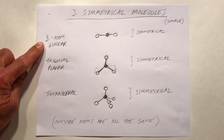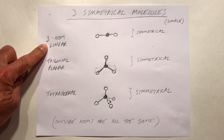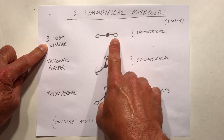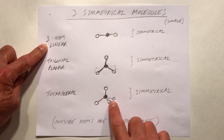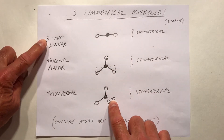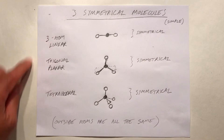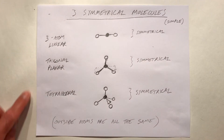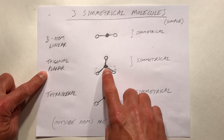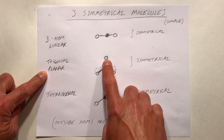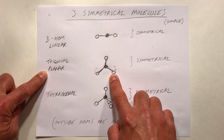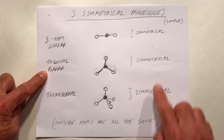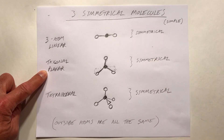If you have three atoms where a central atom is bonded to two identical atoms, that's called three-atom linear, and that would be a symmetrical structure. If you have four atoms where the central atom is bonded to three identical atoms on the outside, that's called trigonal planar, and that's also a symmetrical structure.